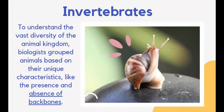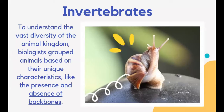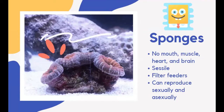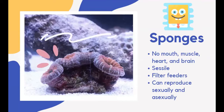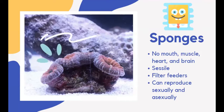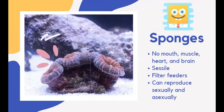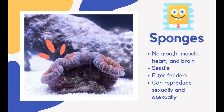Let's talk about invertebrates, starting with sponges. Sponges are aquatic animals with simple body systems. They do not have a mouth, muscle, heart, or brain. Sponges are in a fixed position, usually found on ocean floors. During the early stages of development, sponges swim freely, but as adults they attach themselves to rocks or soil and become stationary. They have an exoskeleton called spicules, which provides support to their body structure.